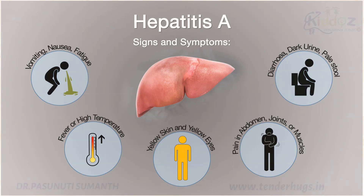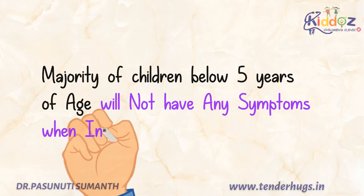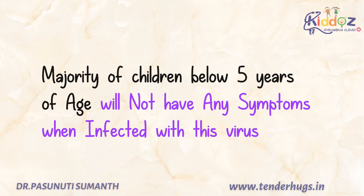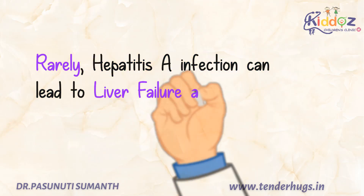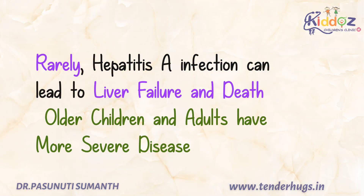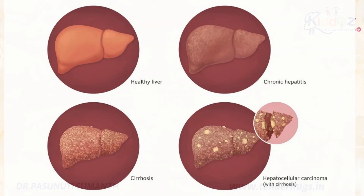Pain in the abdomen, dark yellow color urine, and jaundice. Majority of the children below 5 years of age will not have any symptoms when infected with this virus. Rarely, hepatitis A infection can lead to liver failure and death. Older children and adults have more severe disease compared to younger children.